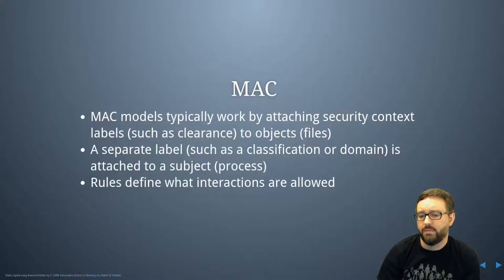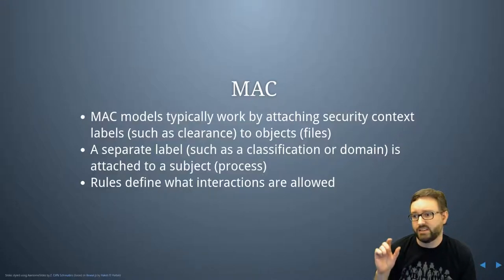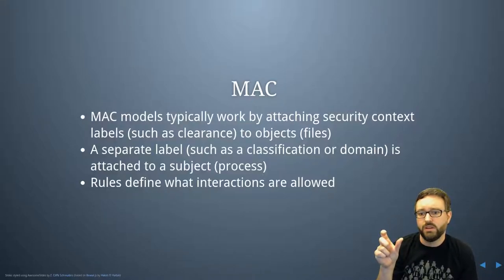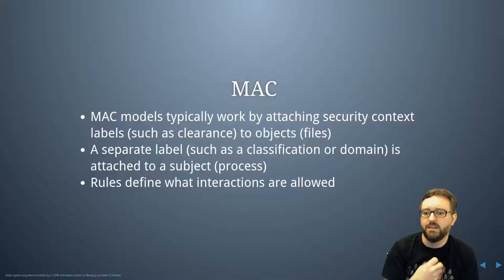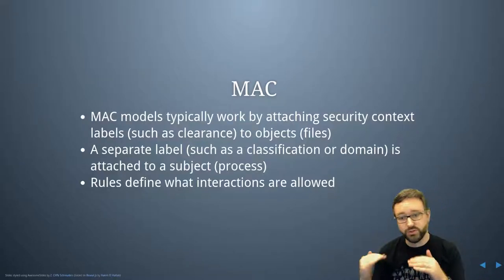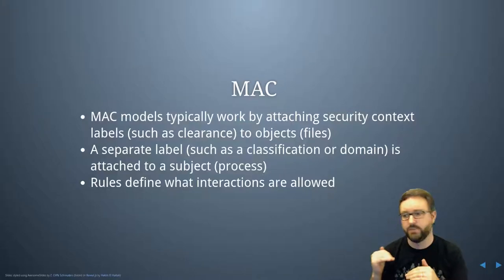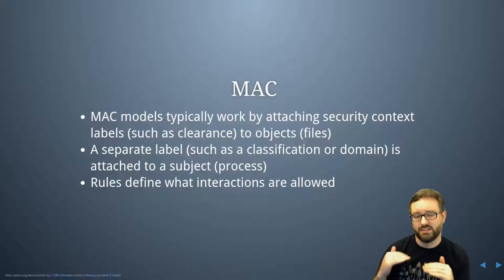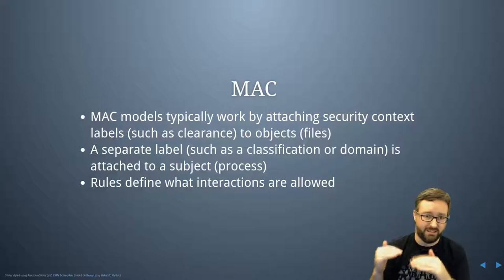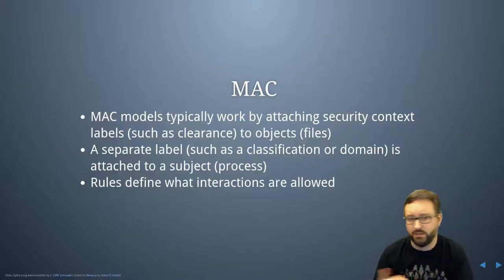Mandatory access controls typically work by attaching a security context label — like a clearance label — to objects on the system, and attaching a separate label like classification or domain to all subjects or processes. You then have rules that define what interactions are allowed between classification levels and clearance levels, so basically they have to match in order to access the file.